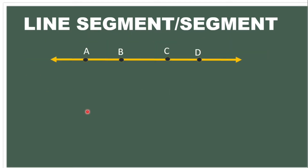Now let us have this example. Let us name all the line segments that we can identify in this line. We have point A, point B, point C, and point D. So first, let us assign a point. From point A, what are the line segments or segments that we can form?